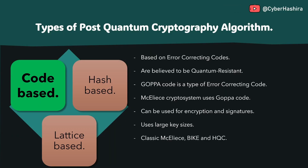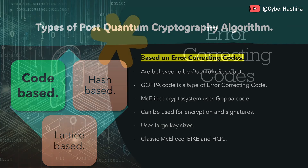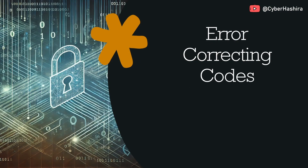Let's start with code-based cryptography. Code-based cryptography is based on error-correcting codes, which is a technique used for detecting and correcting errors in data. When data is transmitted digitally over a noisy channel, the receiver will always use error-correcting techniques to decode the data and correct any errors in it. Code-based cryptography applies the same principle to secure the data.